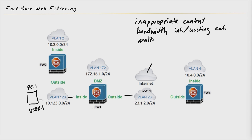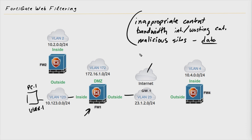There may be malicious sites, and we may be worried about data loss, which could be corporate data or credentials that can be stolen. So if we can train our firewall to do some web filtering and prevent our users from going to those sites, that's a big win. So these are some great reasons regarding why.